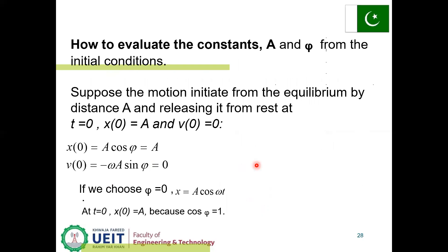To evaluate the constants A and φ: φ is the phase constant and A is the amplitude, both determined from the initial conditions. Suppose the motion initiates from the equilibrium position.